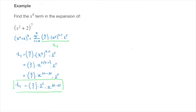Now that that's done, we find the value of r for which this general term corresponds to an x to the power of 8 term. The key thing is to focus on the power of x that we have here — that's x to the power of 14 minus 2r — and solve the following equation.